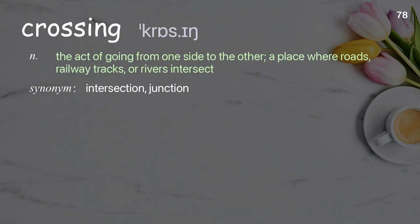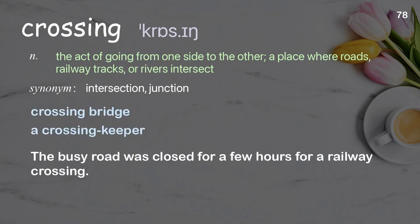Crossing: the act of going from one side to the other; a place where roads, railway tracks, or rivers intersect. Examples: crossing bridge; a crossing keeper; the busy road was closed for a few hours for a railway crossing.